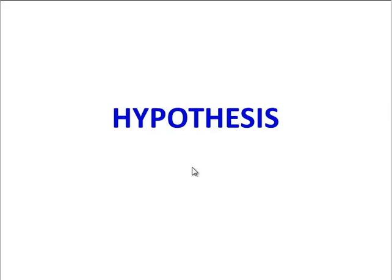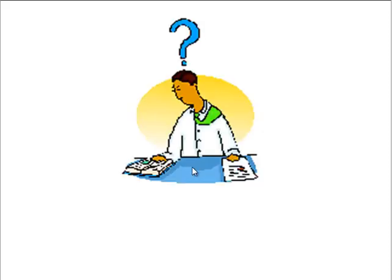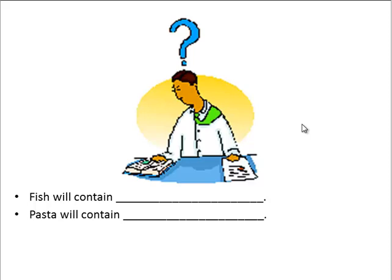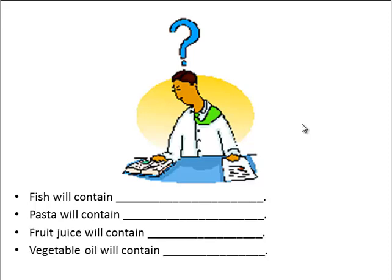For your hypothesis, make a quick prediction. Here are the foods you're going to be testing: fish, pasta, fruit juice, vegetable oil, and beans. Make a prediction as to which molecule will be in each — and perhaps a food has more than one type of molecule.